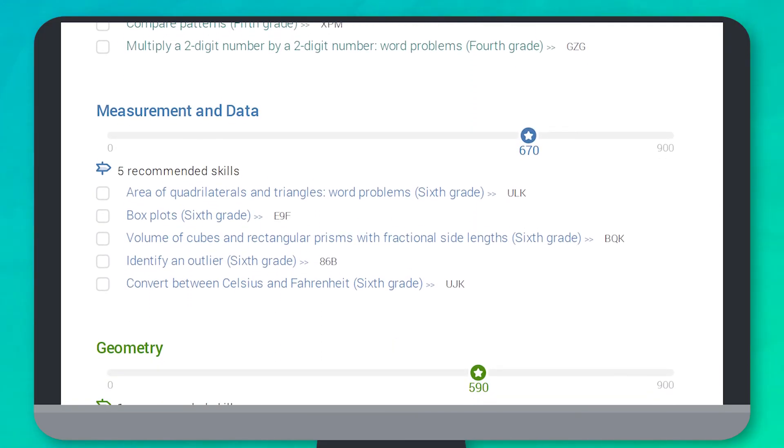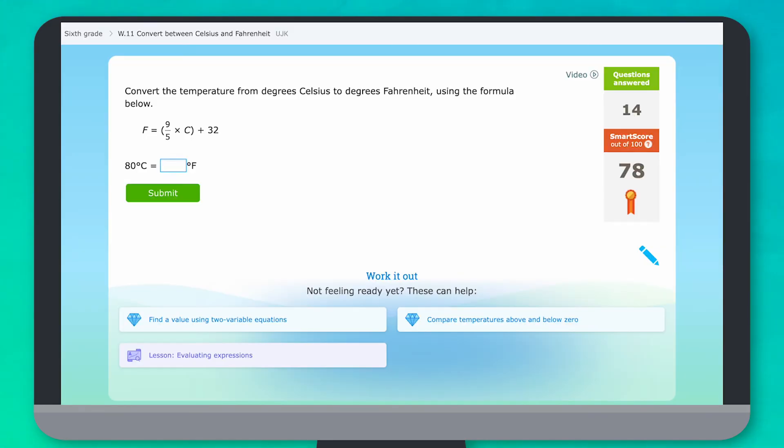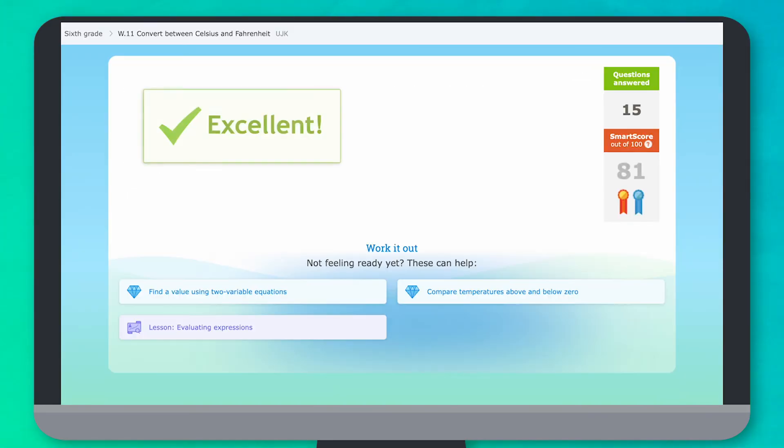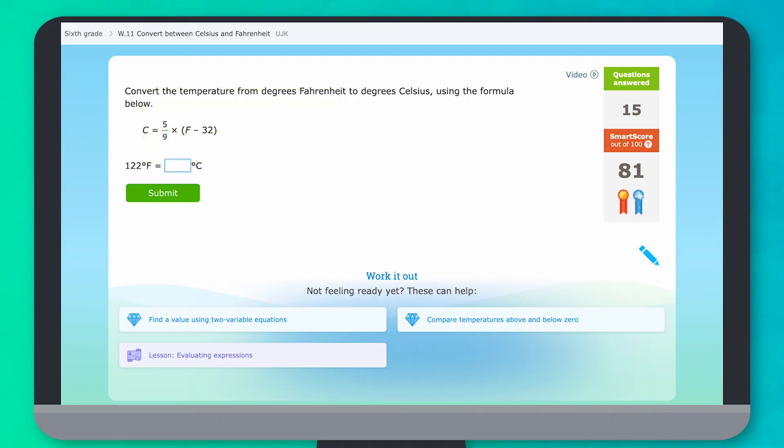Every week, try to work on at least two skills from your list of recommendations and aim for a smart score of 80. An 80 means you really understand the topic.